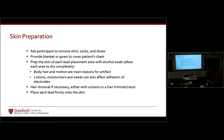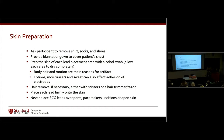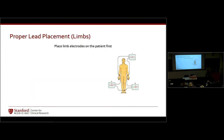Place each lead firmly onto the skin. As you learn to place electrodes, identify your landmarks and alcohol those specific spots — not the whole chest. Never place leads or electrodes over ports, pacemakers, medication patches, incisions, or open skin. If something prevents normal placement — like a cast or broken wrist — place the lead as close to that area as possible, such as on the upper arm. Same applies to chest leads if there's a pacemaker or port.